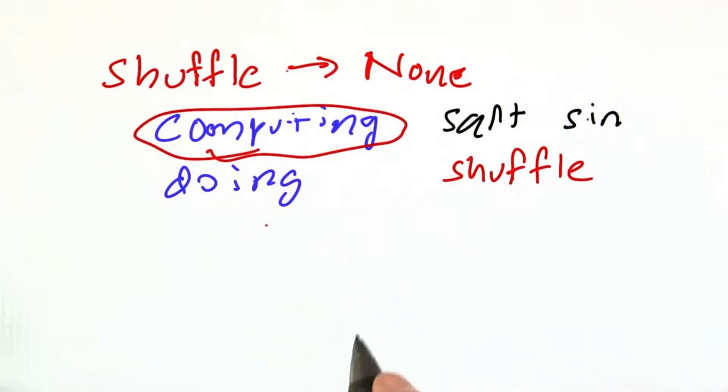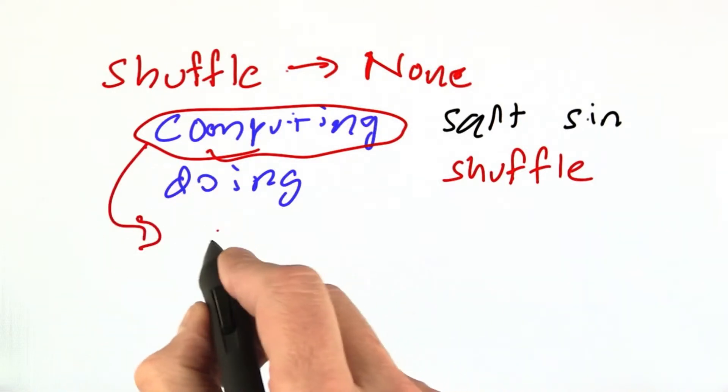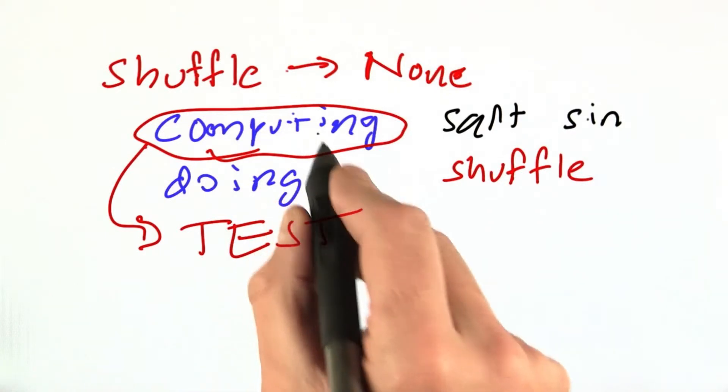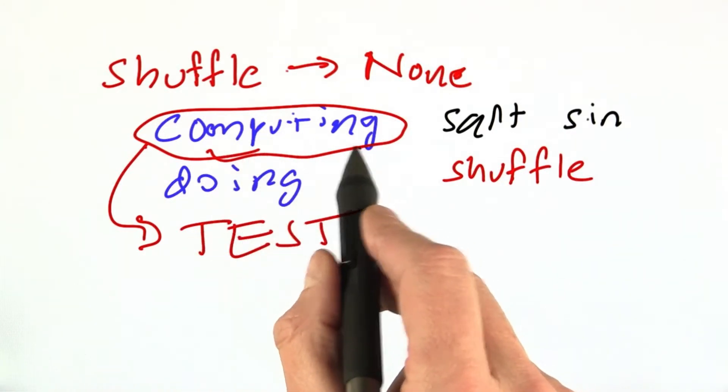The main reason for this is that the computing code is easier to test. If I wanted to write a test for a computing function, for a pure function,